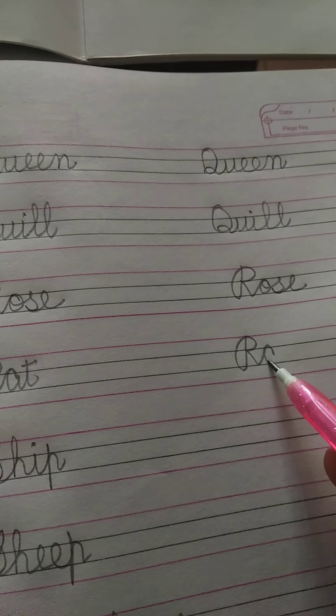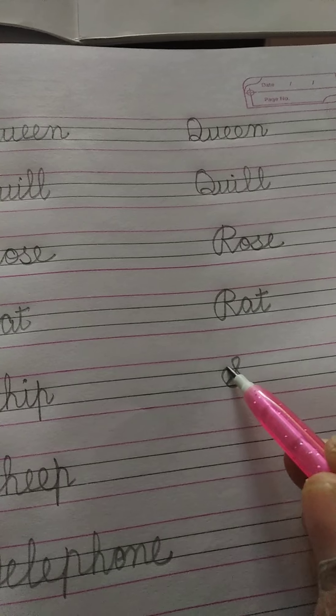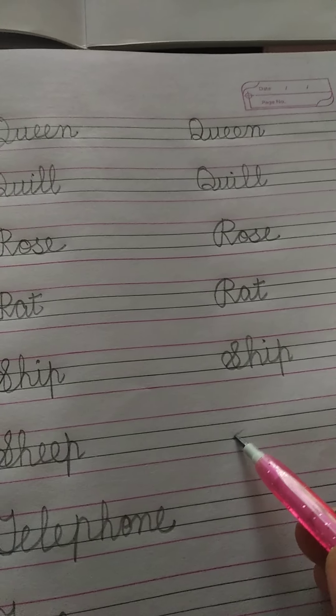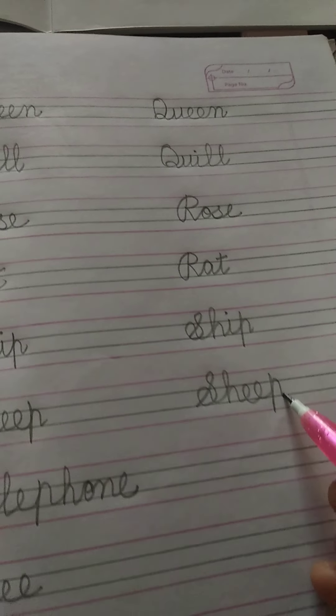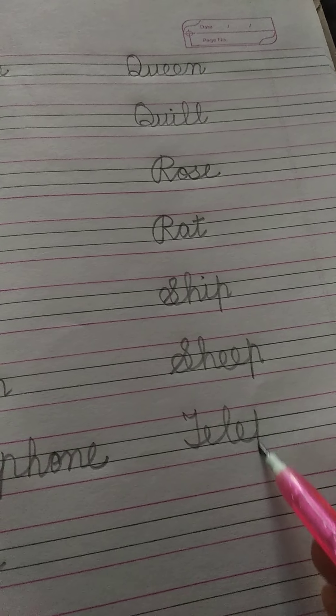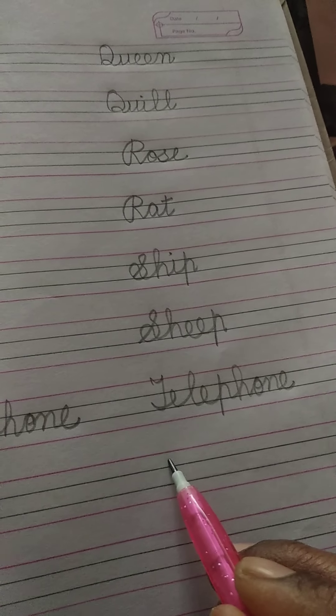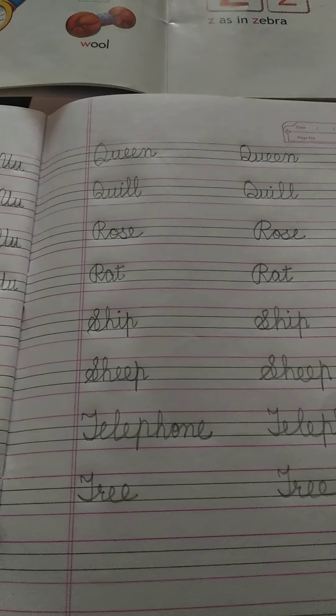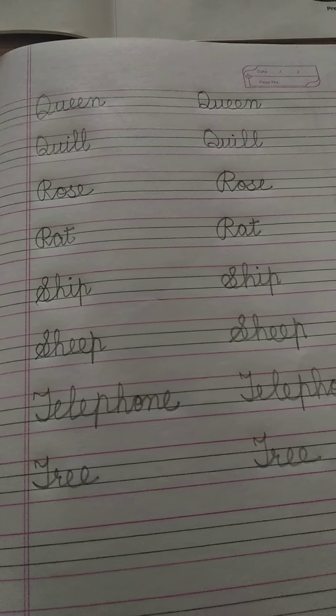So again you write here rose R O S E rose, rat R A T rat, ship S H I P ship, sheep S H E E P sheep, T E L E P H O N E telephone and tree T R E E tree. So now you write this and learn well, understand, learn this all the spellings.